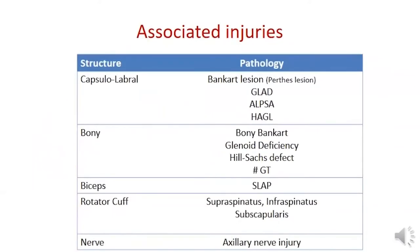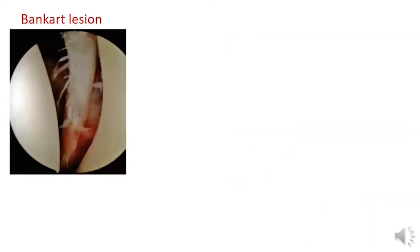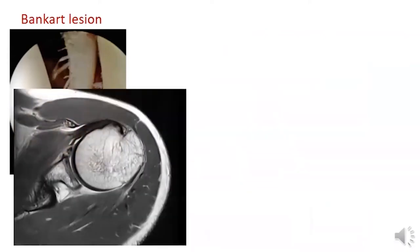It is very important to understand the pathology commonly associated with anterior glenohumeral instability in order to appropriately address these lesions when diagnosed. The Bankart lesion is an avulsion of the anterior labral-ligamentous complex and is associated with 90% of all anterior shoulder dislocations.